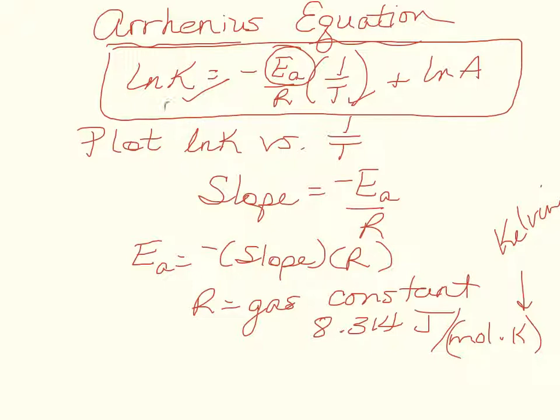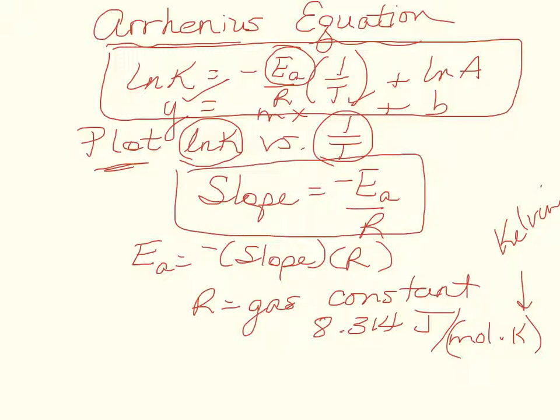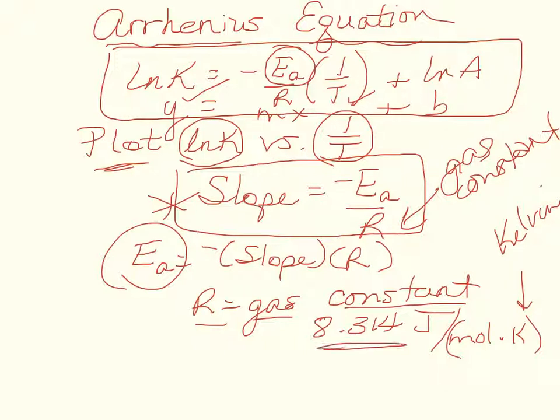Which of course is Y equals MX plus B. So if we make a plot where Y is the natural log of K and X is one over T, then the slope of this line would be minus activation energy divided by R, which is the gas constant. And if we rearrange this equation for slope, then you can solve for activation energy.